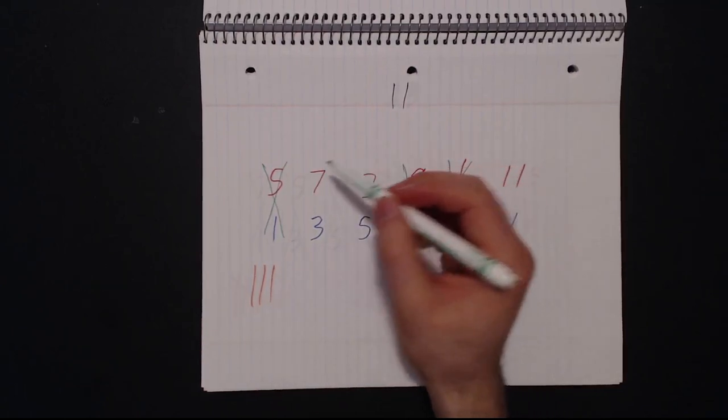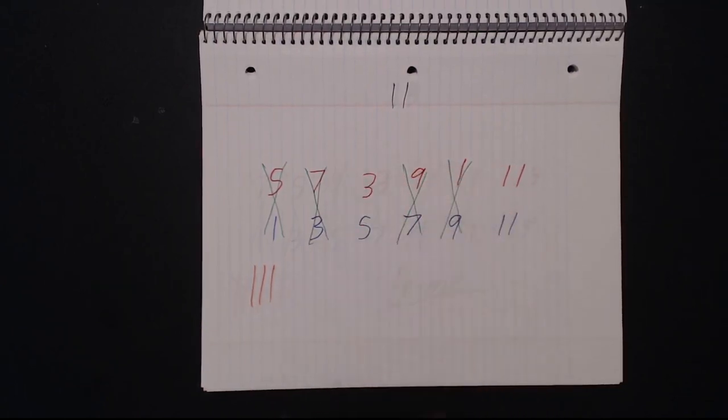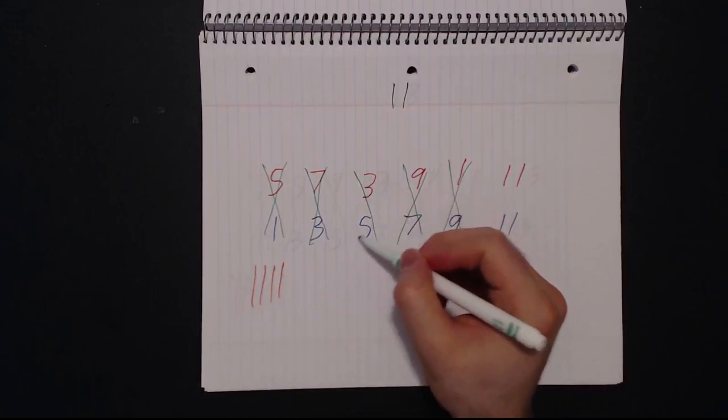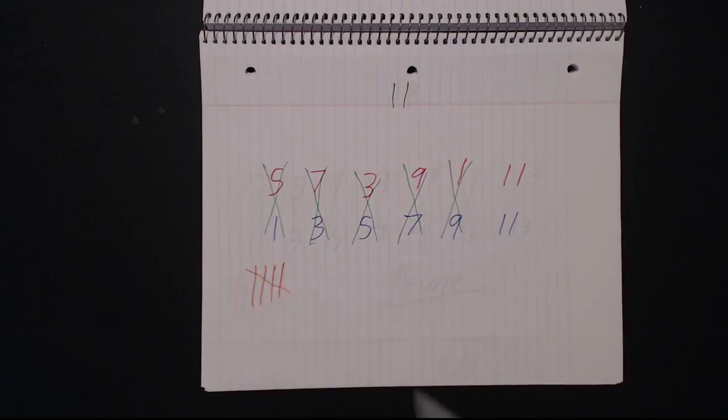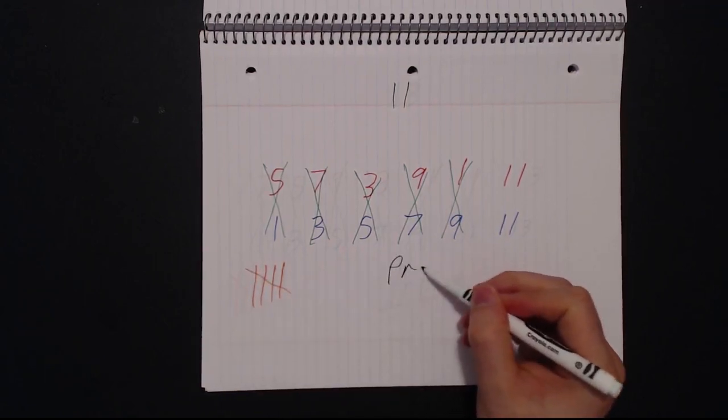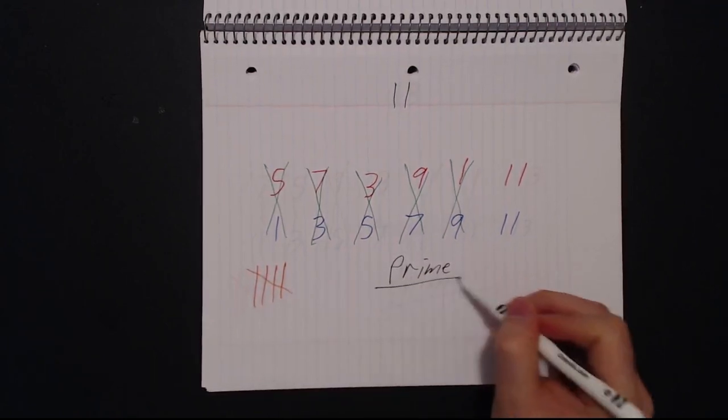Next is 7. Cross out the column for 7 and put a tick mark. Next is 3. Cross it out and add a tick mark. Take a look. We've now crossed out all of the columns except for the number 11. This means that the number is prime.